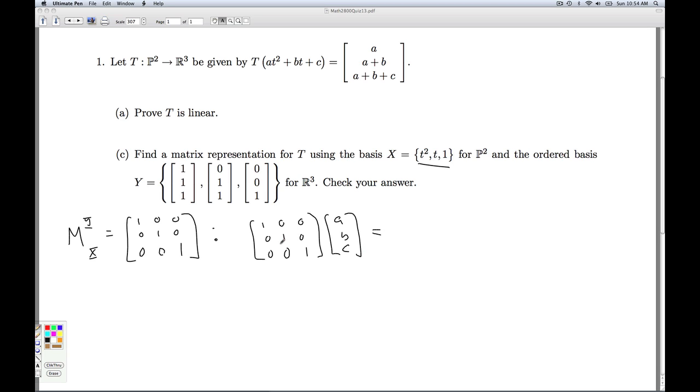Now, this is the identity matrix. I just get A, B, C back. But remember, this A, B, C here is interpreted in x-coordinates. So that's an element of P2. It's A T squared plus B T plus C.